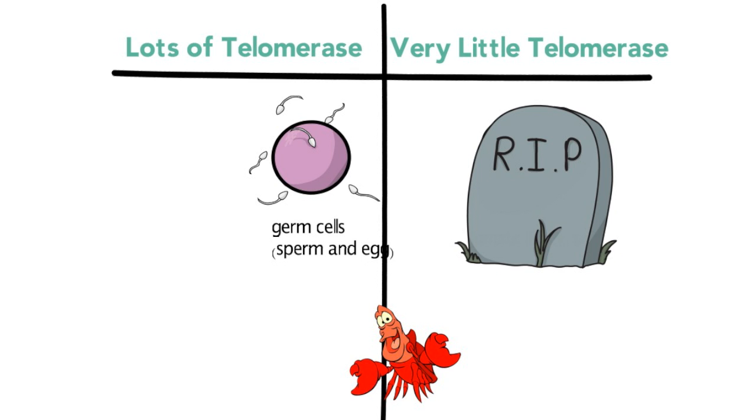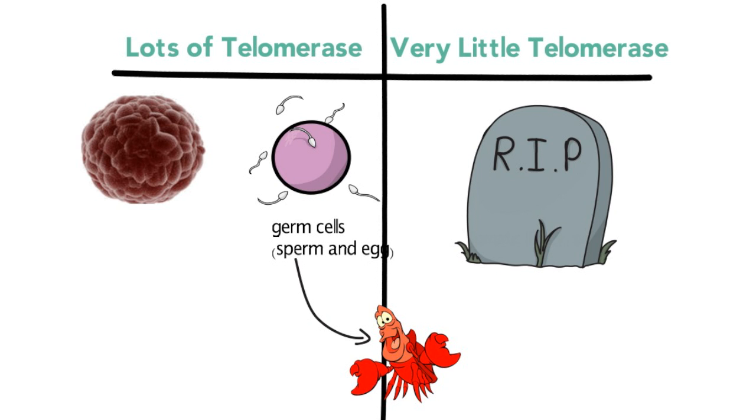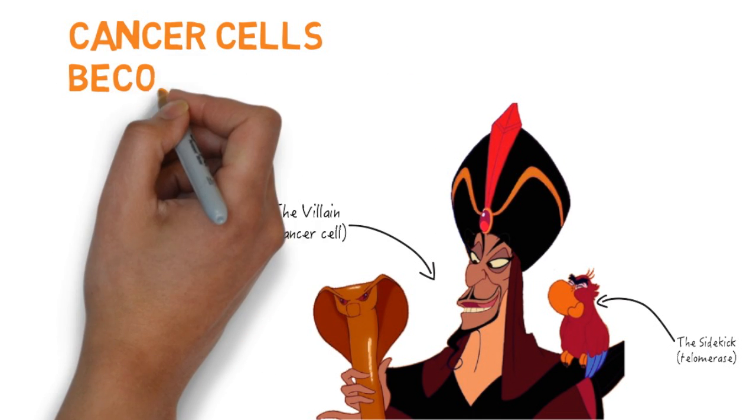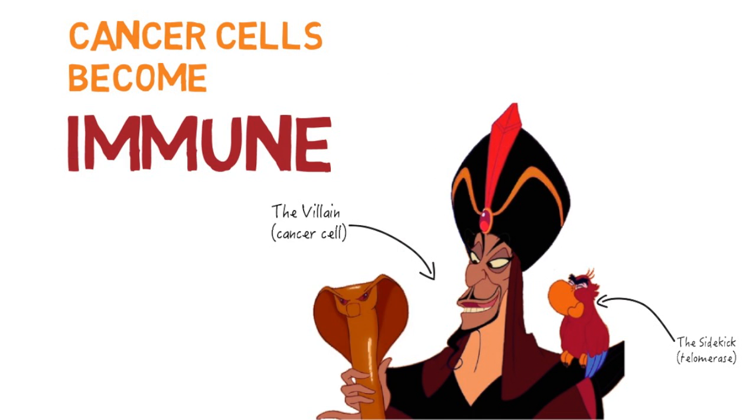Lobsters have a lot of germ cells, which is why they can technically live really long. And the scary part is that cancer cells have a lot of telomerase as well. That means, like a psychic to a villain, telomerase can help cancer cells extend their telomeres so they become immune.